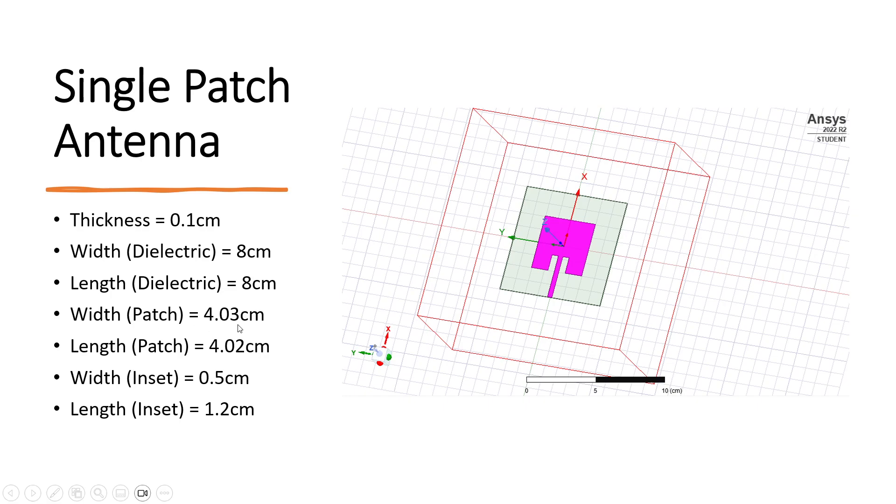Here, width controls the bandwidth. Other parameters are chosen, again, by trial and optimization.